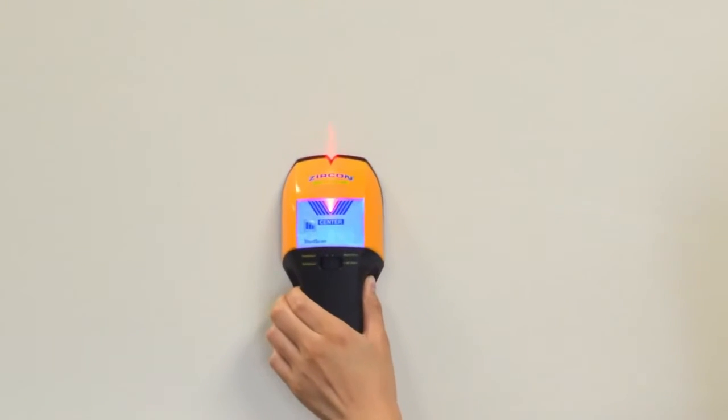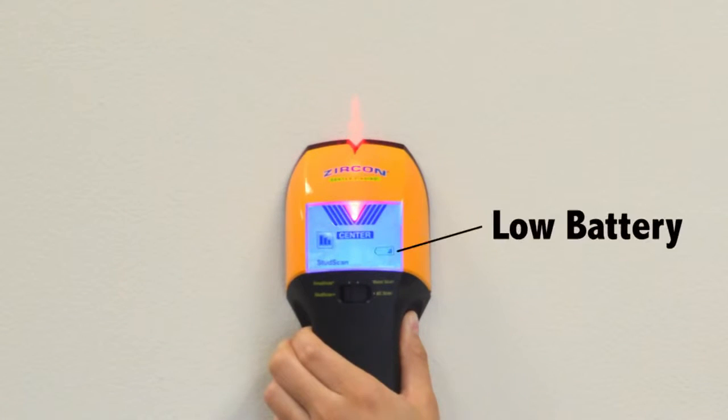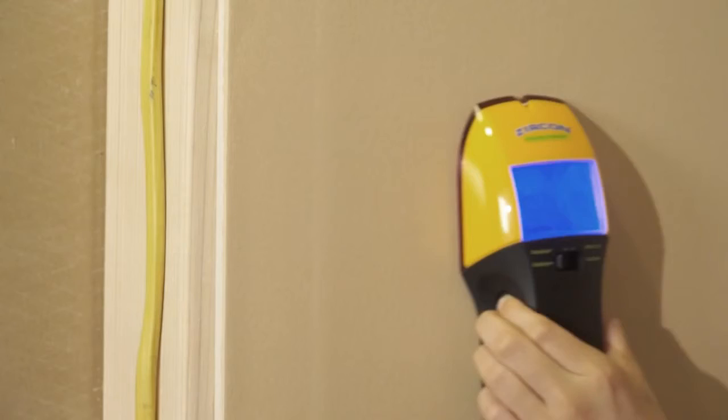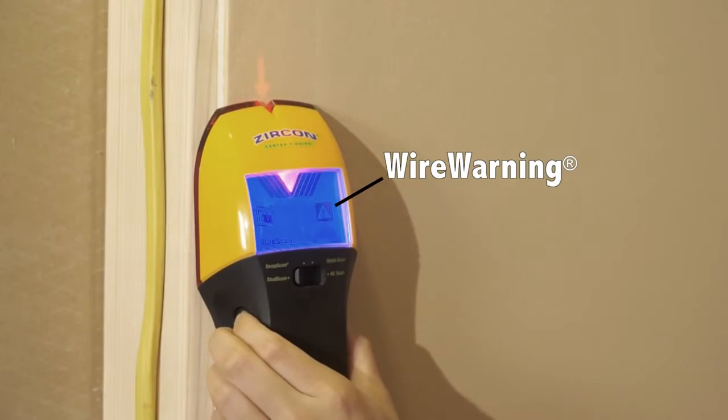It also features a backlit display for hard to see places, a low battery indicator, and wire warning detection to alert you to the presence of live AC in stud and metal scan modes.